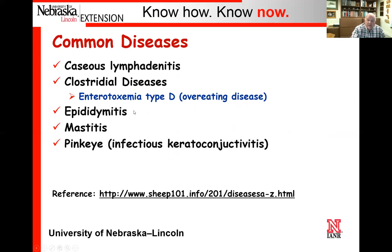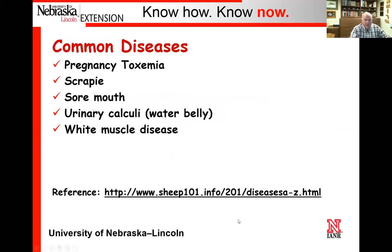Epididymitis is a disease that has an issue with rams. Of course, mastitis with lactating ewes. Pink eye. Another one is pregnancy toxemia, associated with ewes that are giving multiple births — twins and triplets. Scrapie, sore mouth, urinary calculi also known as water belly, and white muscle disease, which is kind of a degenerative disease of the muscle.